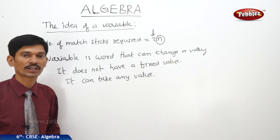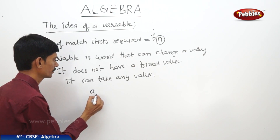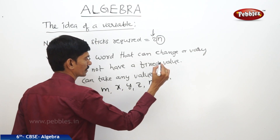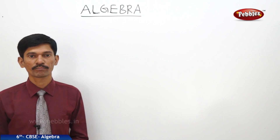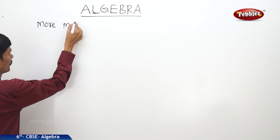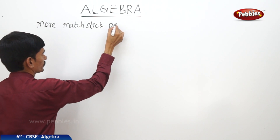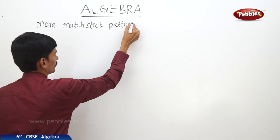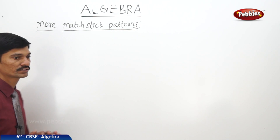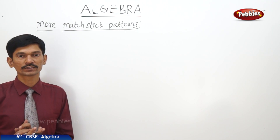Usually variables are represented by lowercase letters like a, m, x, y, z, n, etc. Now let us see some other matchstick patterns. Now if you want to form the letter C — to form one letter C, how many matchsticks are required?